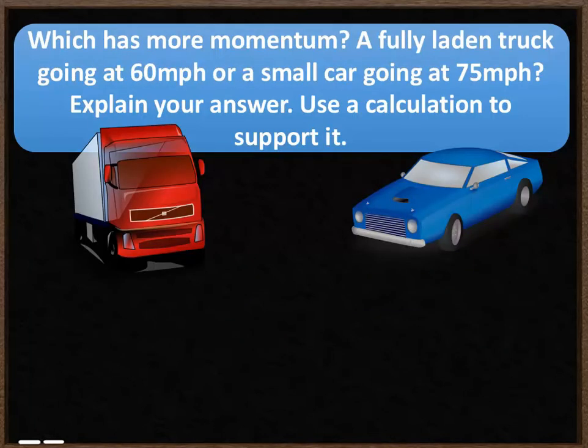The next question asks: which has more momentum — a fully laden truck travelling at 60 miles per hour, or a small car travelling at 75 miles per hour? Try to explain your answer using a calculation. You can estimate the mass of the truck and the car, then see which has the larger momentum.